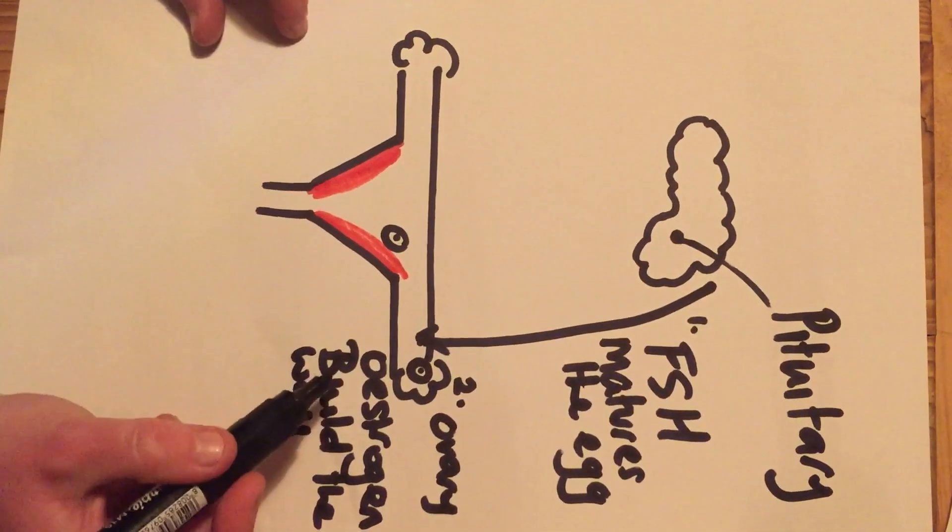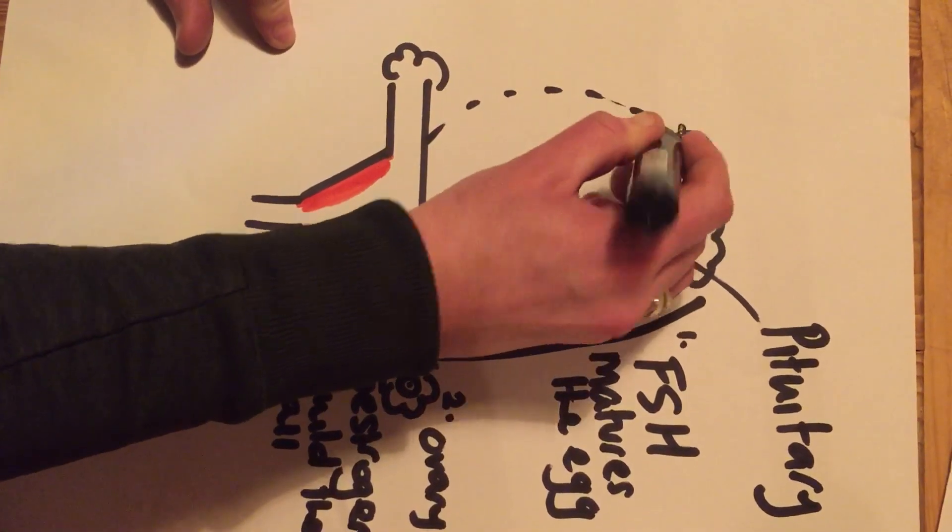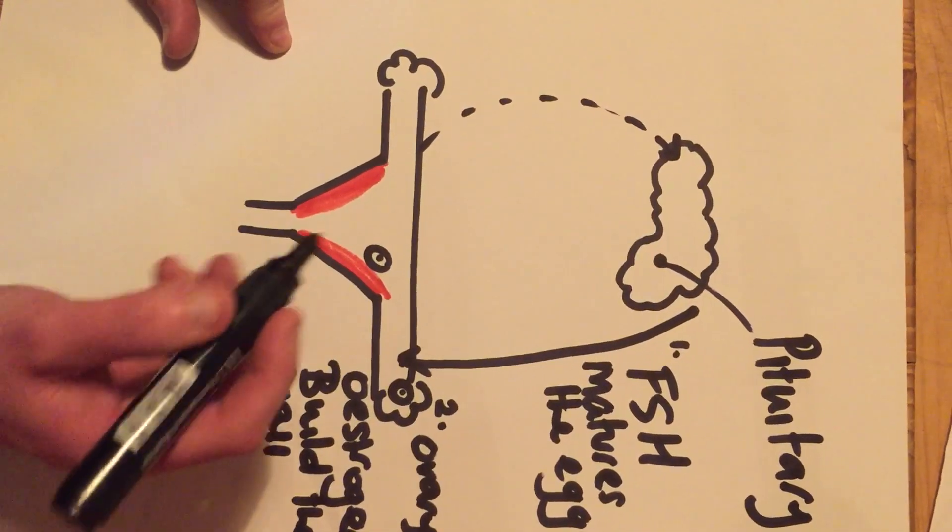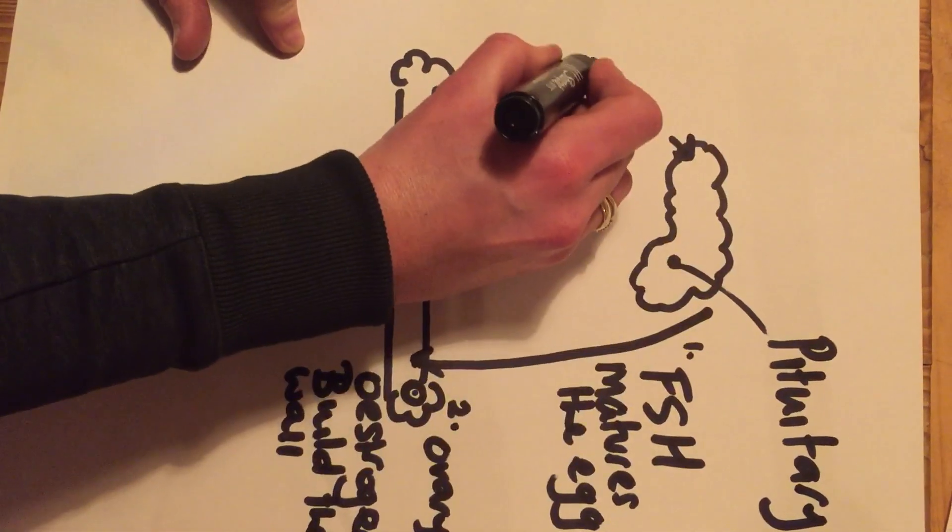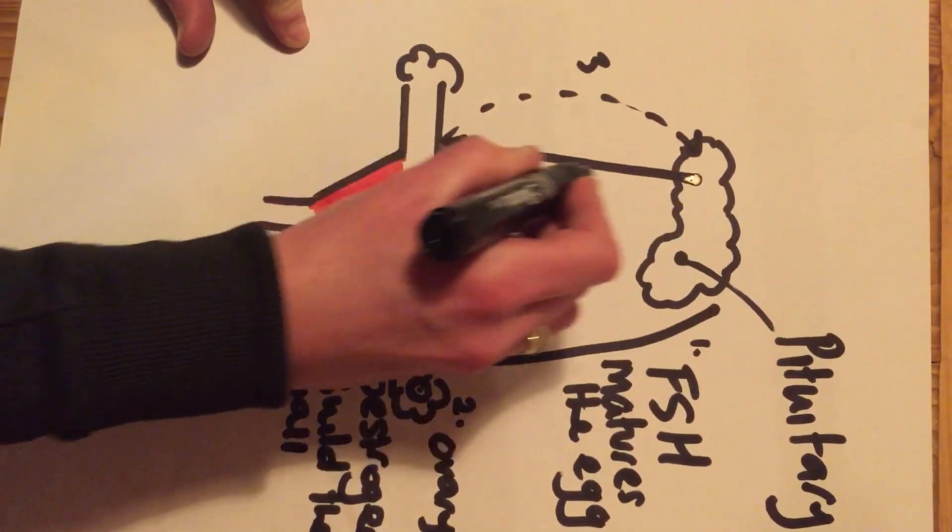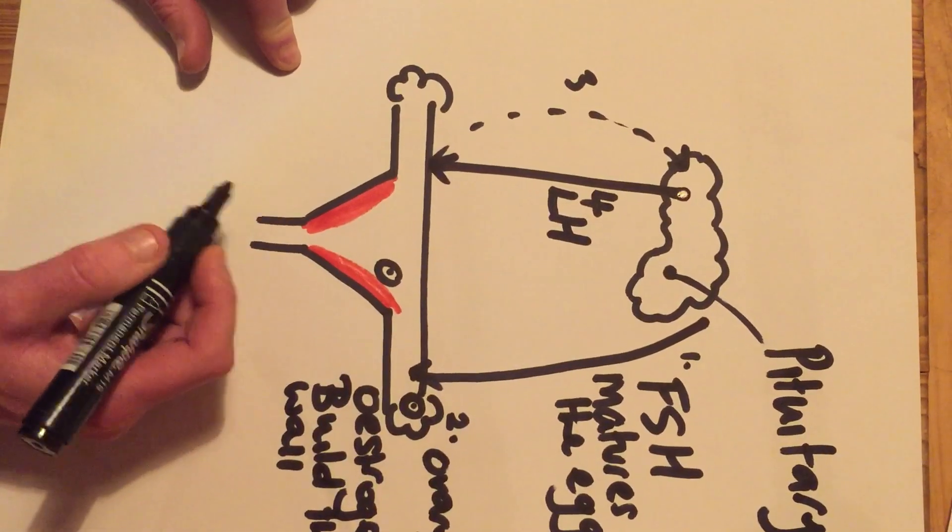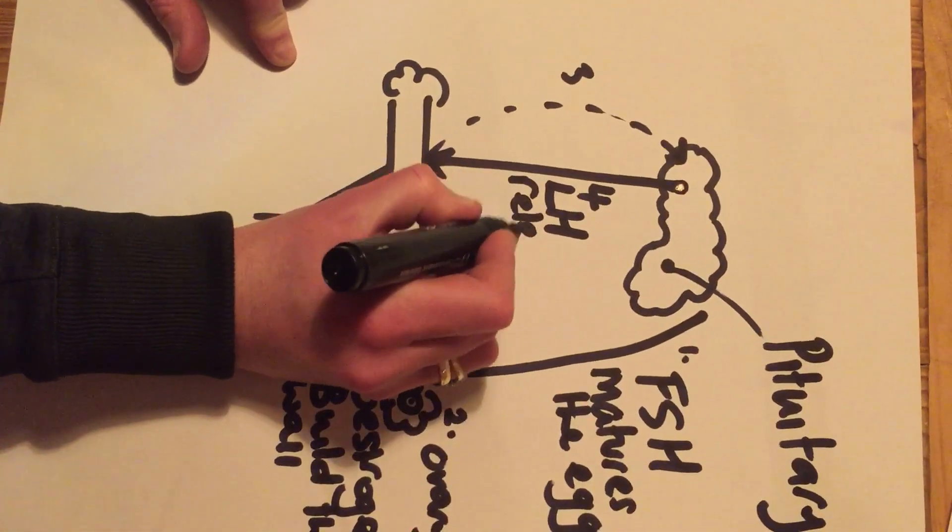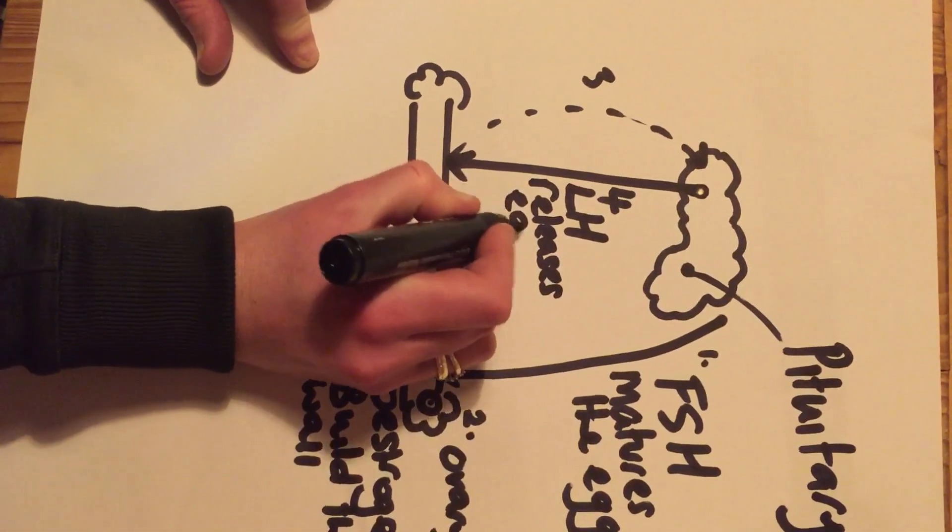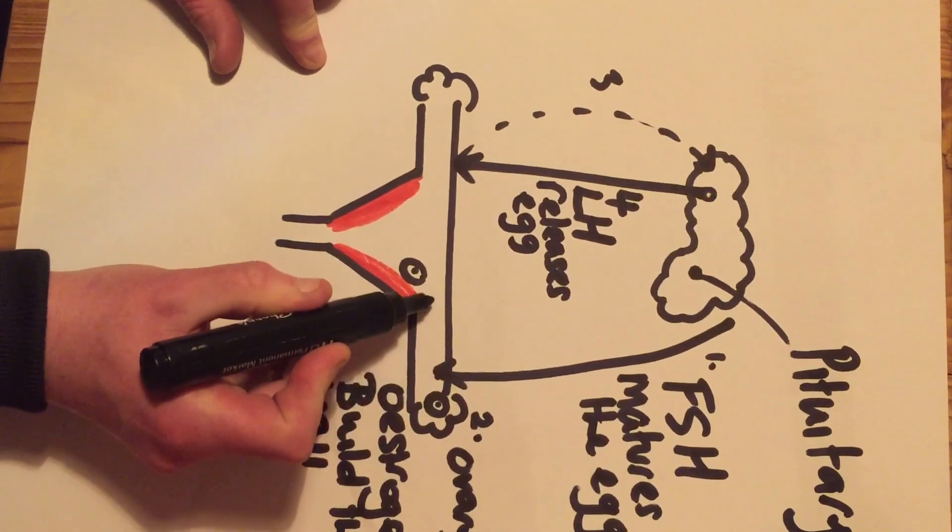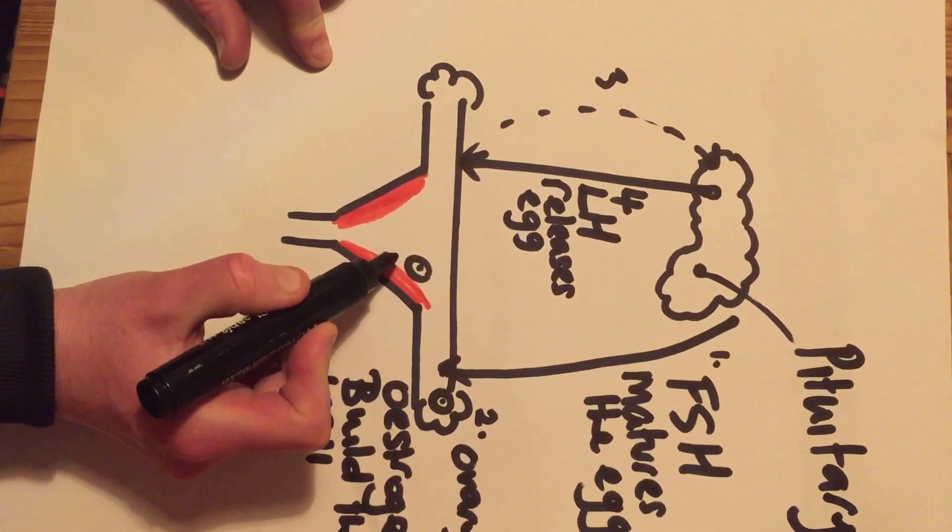Now, oestrogen acts back on the brain, and it tells the brain to release another hormone, which is called luteinising hormone. And what luteinising hormone does, or LH, is it releases the egg. So the egg will move down the fallopian tube to the lining.